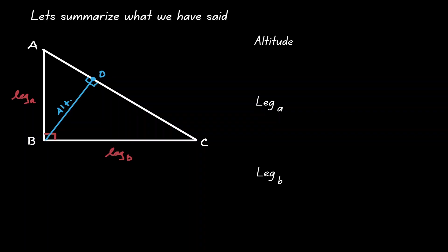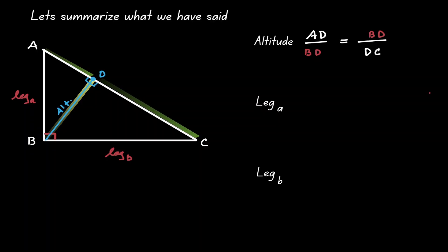We have created three right triangles, and within these three right triangles we have special proportions. We have a proportion where BD is a geometric mean: we set it up as a fraction equal to another fraction where the denominator of the first fraction is BD, the numerator of the second fraction is BD, the numerator of the first fraction is AD, and the denominator of the second fraction is DC. One way to remember this is that it looks like a T.